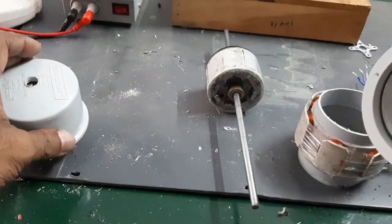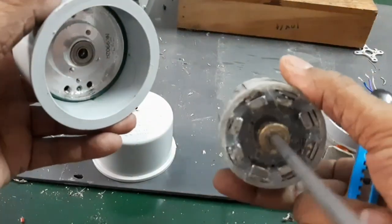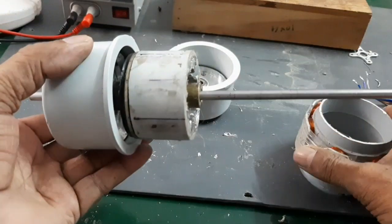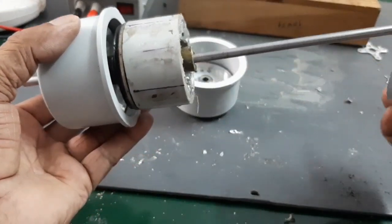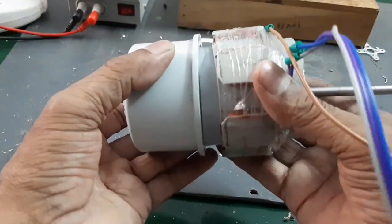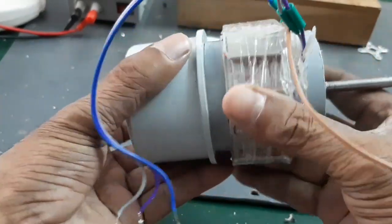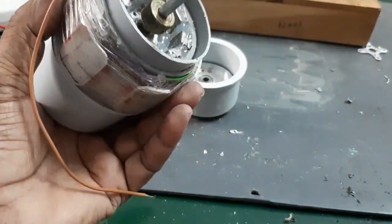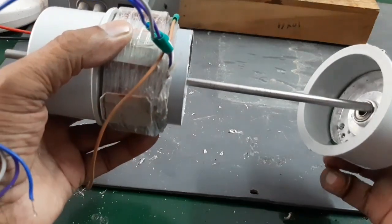Now, I am going to assemble the motor. Here, one end cup is inserted. Now, I am going to insert the stator. Here, the stator is inserted. Now, I am going to insert the other end cup.